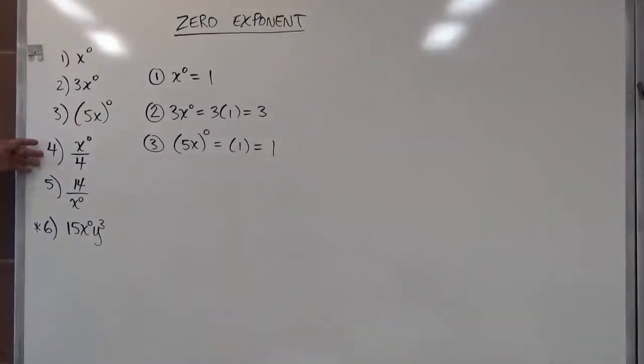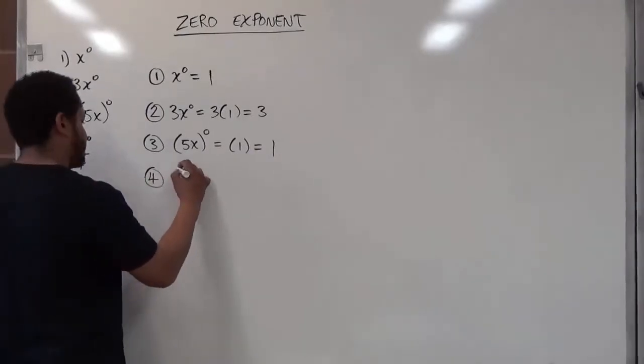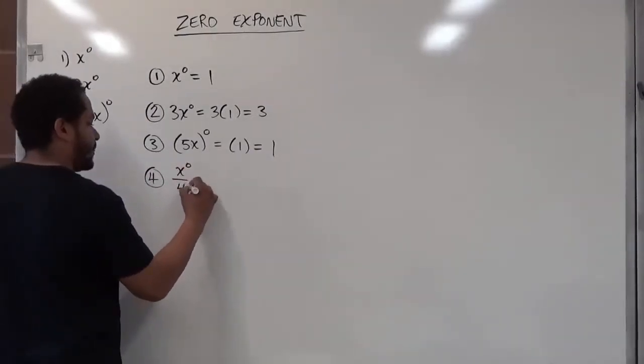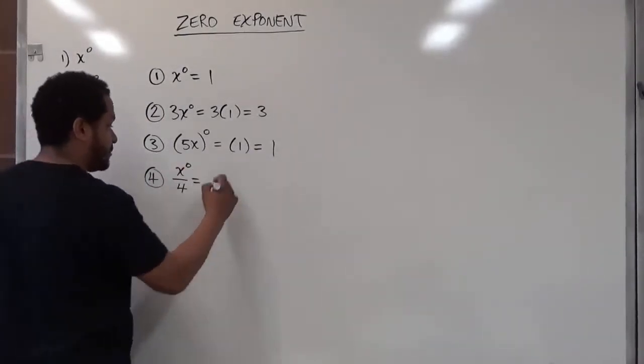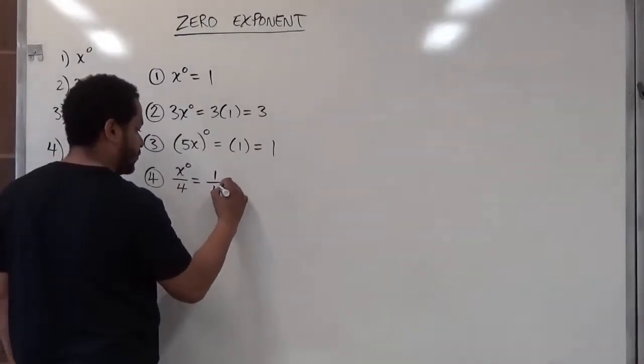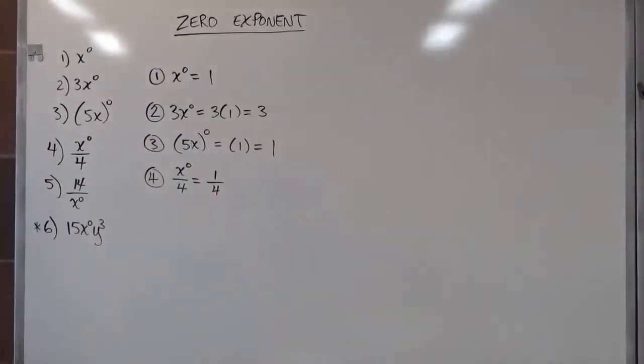Now let's move on to problem four where we're using division instead of multiplication to see how this exponent affects everything. So if we have x to the power of zero over four, again only the numerator here is becoming a one, not the whole thing, and the four just remains four. And that would be our final answer.